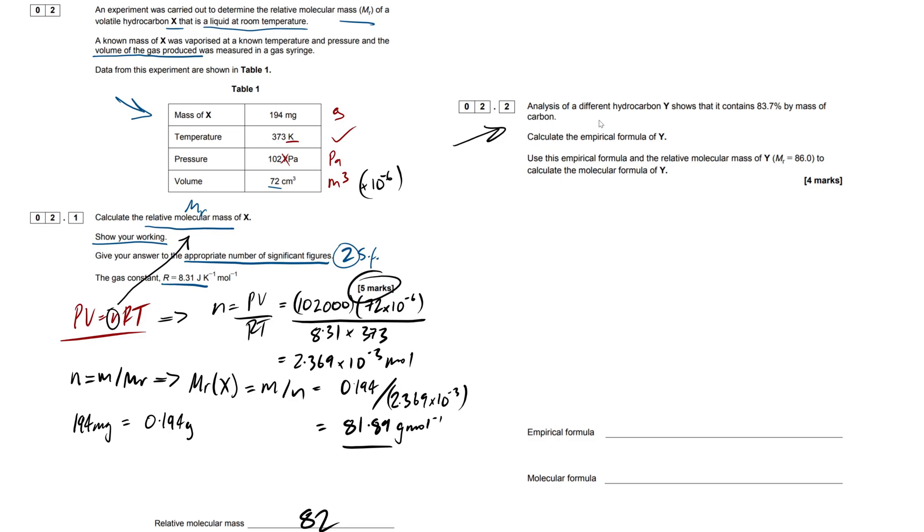Next off, we're going to jump into this empirical and molecular formula question. So an analysis of a different hydrocarbon wire this time, not x anymore, shows that it contains 83.7% by mass of carbon. Now we know it's a hydrocarbon, therefore the remainder percentage is going to be composed of hydrogen. It's pretty simple. Hopefully you've come across these questions before, and we have to calculate the empirical formula of y, and then use that empirical formula and the relative molecular mass, which has been given to 86, in order to calculate the molecular formula of y. So empirical formula, as always, is just the lowest ratio possible in the compound between the different atoms, and the molecular formula is going to be our actual ratio that we have.